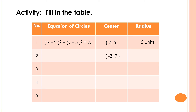In item number 2, the center of the circle is (negative 3, 7) and the radius of the circle is 8 units. So the value of h is negative 3, the value of k is 7, and the value of r is 8. So the equation of the circle is the quantity of x plus 3 squared plus the quantity of y minus 7 squared is equal to 64, since 8 times 8 is equal to 64.